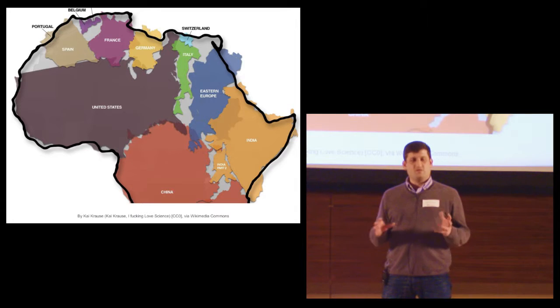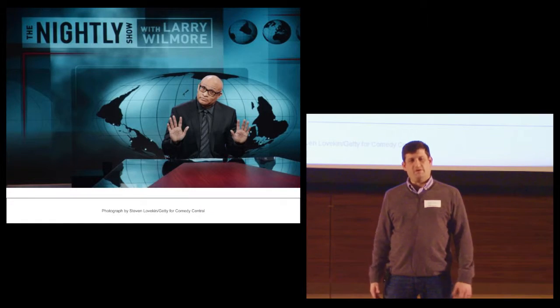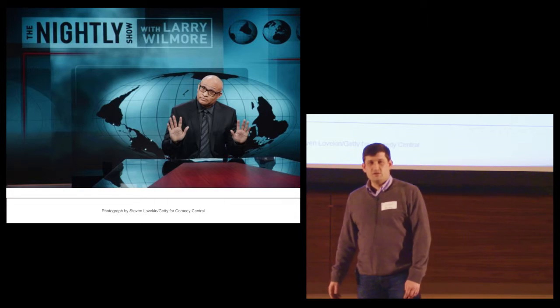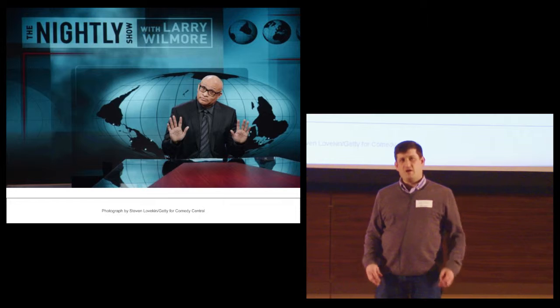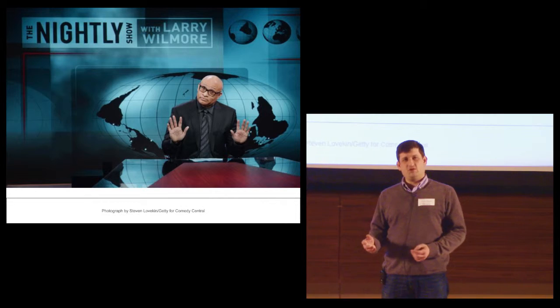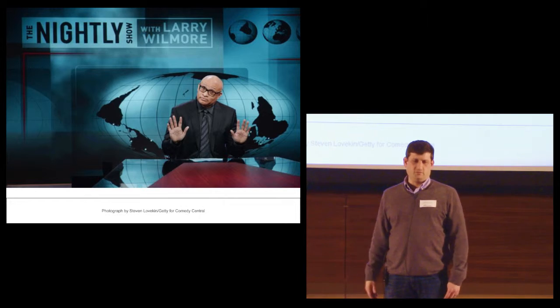But people won't stop making flat maps of the whole Earth, because they can be shown on TV. So the best we can do is understand which lie the cartographer chose to tell. Are they lying about area, or about position, or about location, distance?